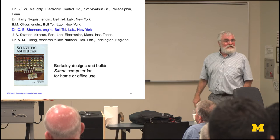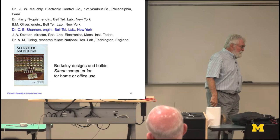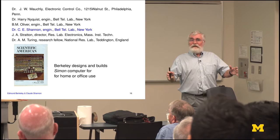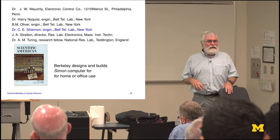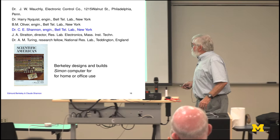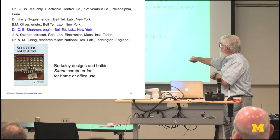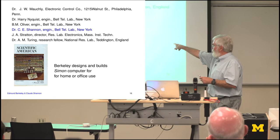Scientific American in the same year had Simon. Simon was the fruition of Berkeley's project to build a small computer that could be in a home. He wrote a lot of papers in popular science and radio magazines talking about it — probably costing around $200 at that time. It wasn't a very serious computer, but it was an electronic computer. This was the date it was published, but 1947 was when the project actually started.